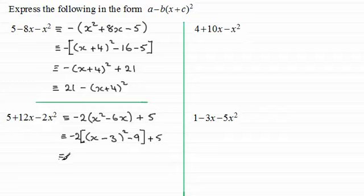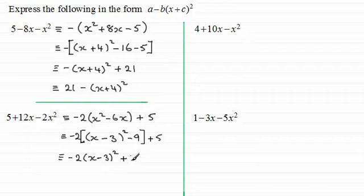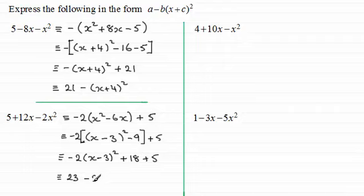Now expand the bracket and you're going to get minus 2 times all of x minus 3 all squared. Then you've got minus 2 times minus 9, which is plus 18. And then you've got the plus 5. Simplifying, 18 plus 5 is 23, so we've got 23 minus 2 times all of x minus 3 all squared. With this one, a would be 23, b would be 2, and c would be minus 3.